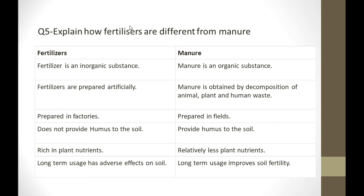Fertilizers are rich in specific plant nutrients — a single particular nutrient in excess. Manure has less concentration of nutrients but provides all nutrients and improves overall soil health. Long-term use of fertilizers has adverse effects on soil fertility, but long-term use of manure improves soil fertility.